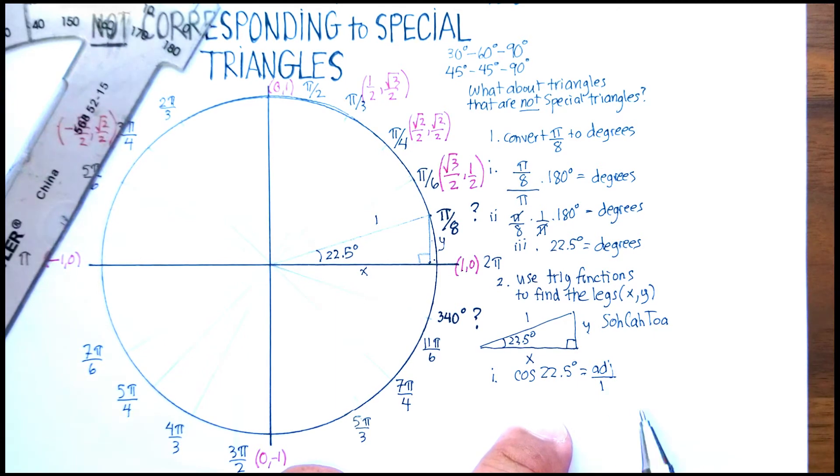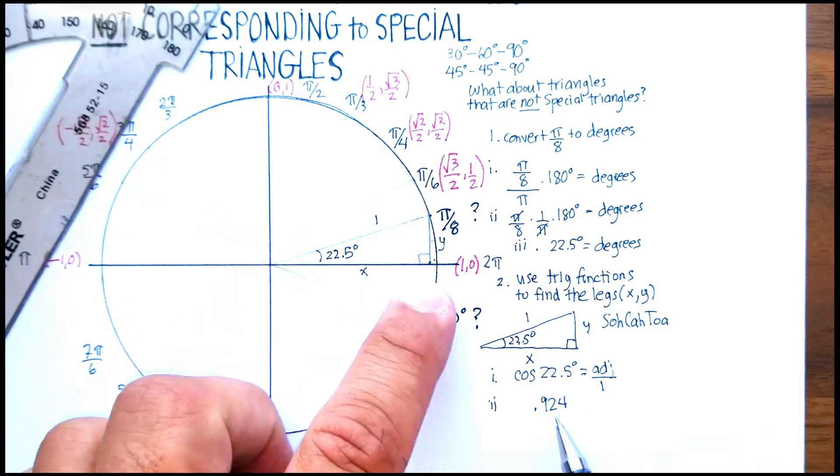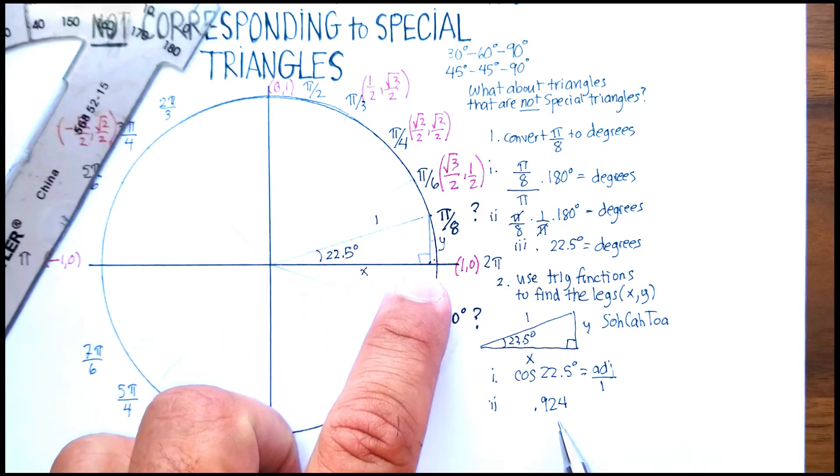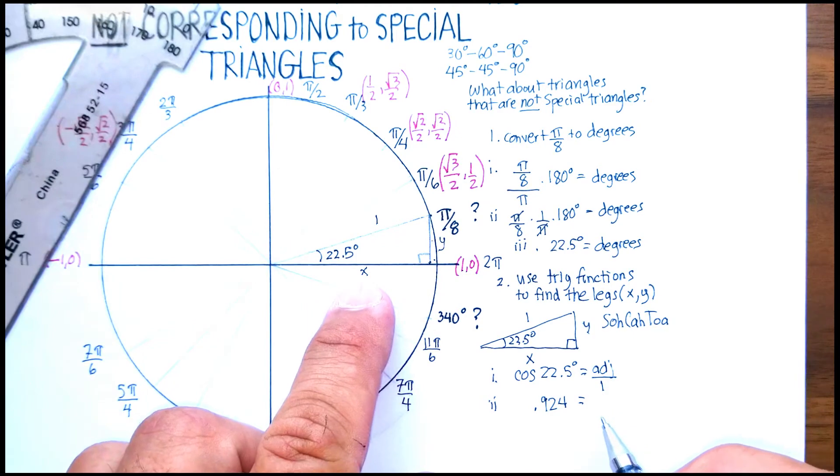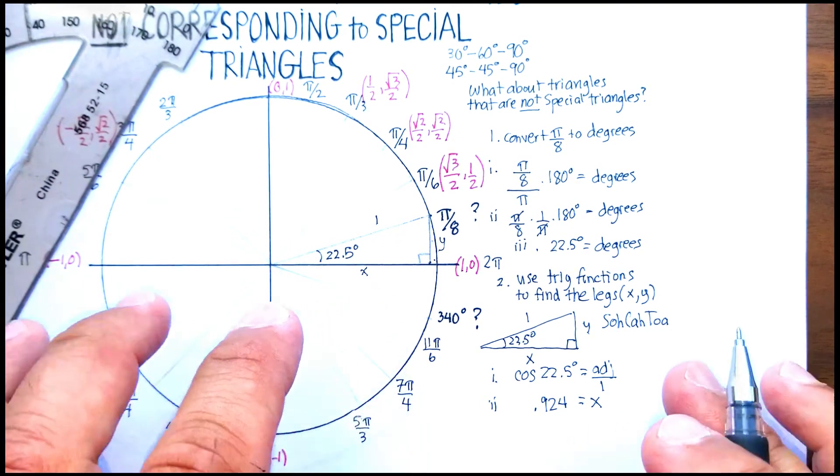And you're going to get 0.924—let's just go to three places. And that actually makes some sense, right? 0.924 is almost 1. That's going to be equal to our adjacent side, because just divided by 1, or our x. Now we have found that value.